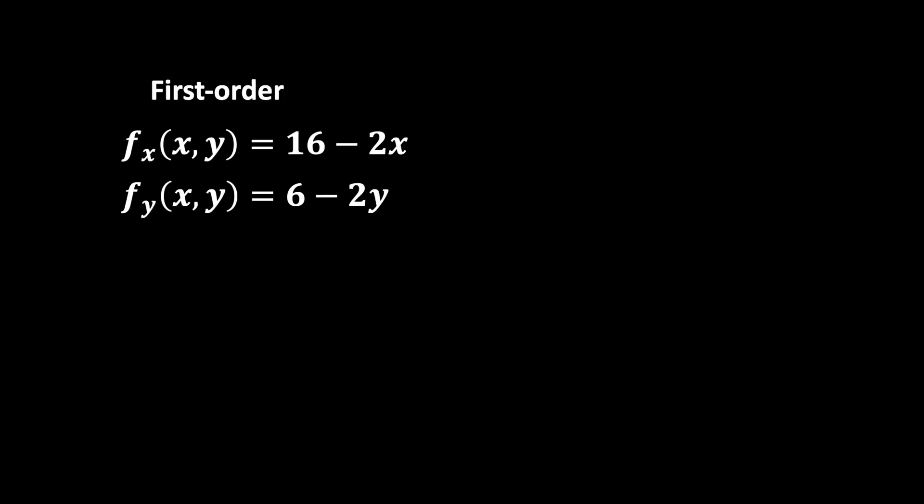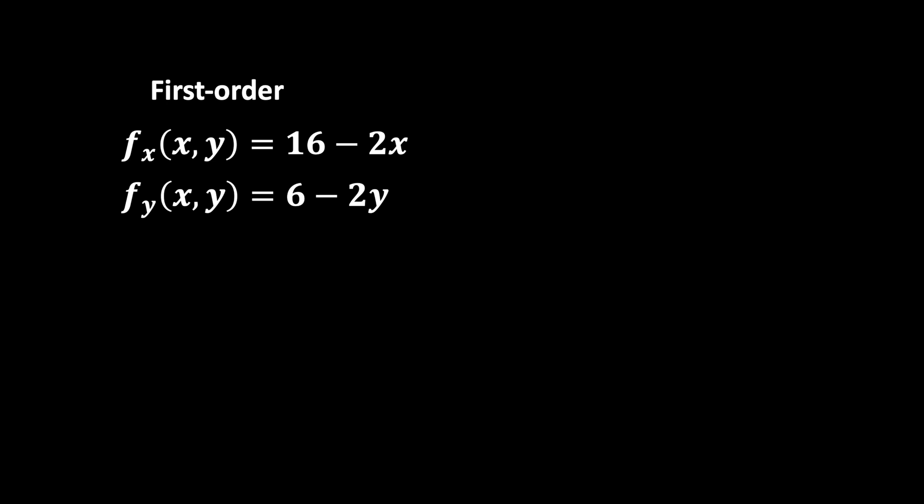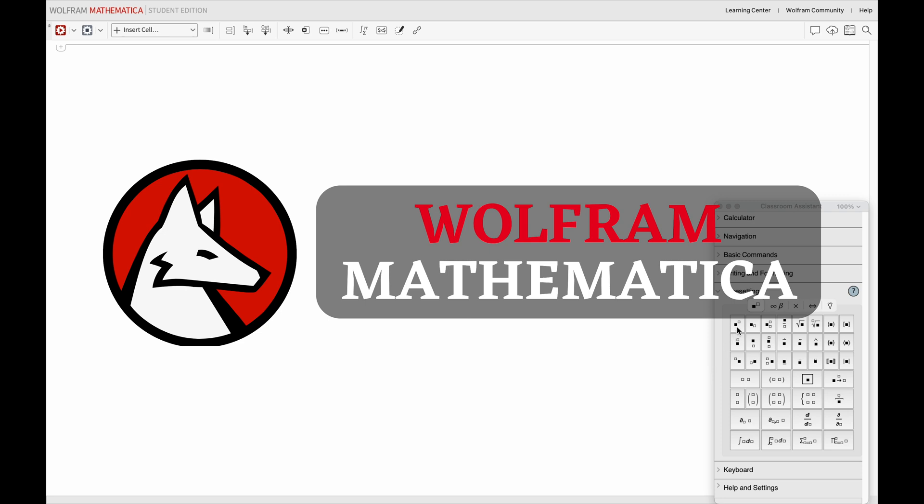By taking x and y terms constant where appropriate, we find these two first order partial derivatives. From which we can then find the three second order partial derivatives, including the cross partial derivative in this way. But we can use Wolfram Mathematica to get these solutions instantly and check out if our work is correct.